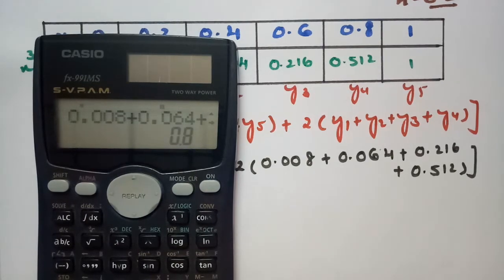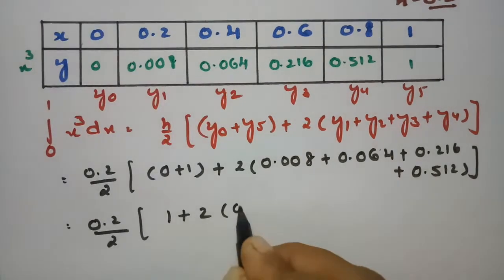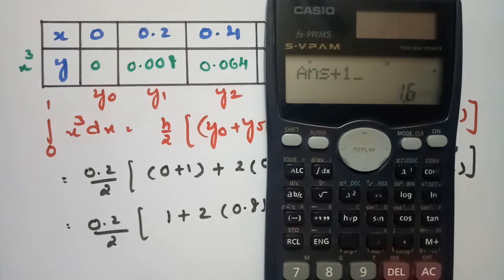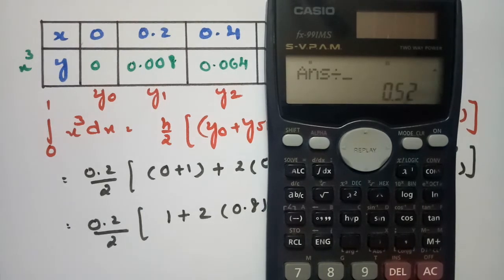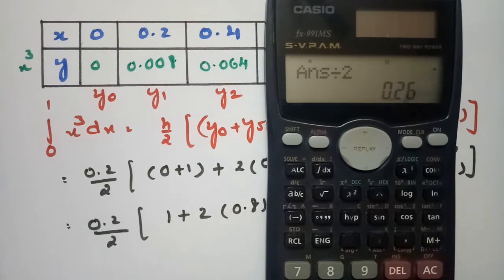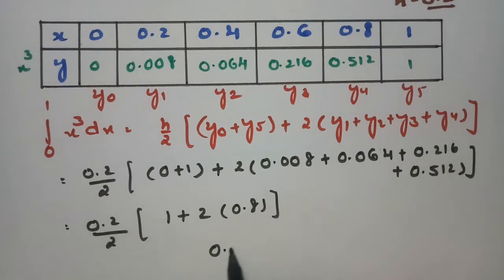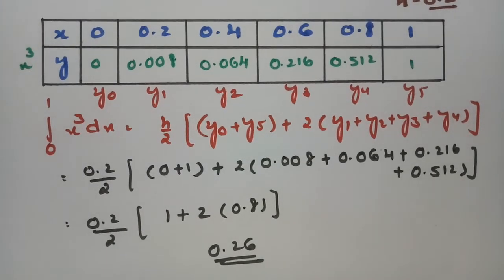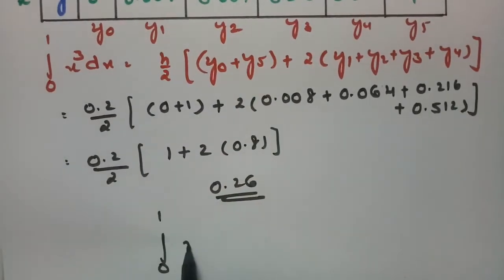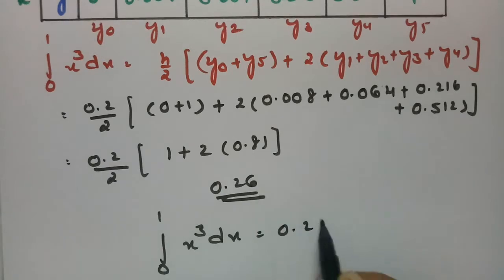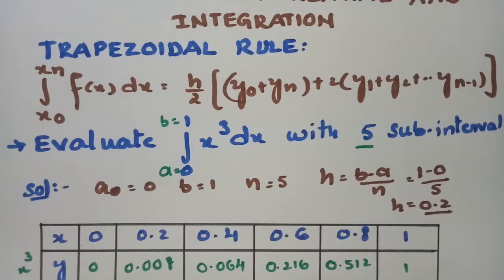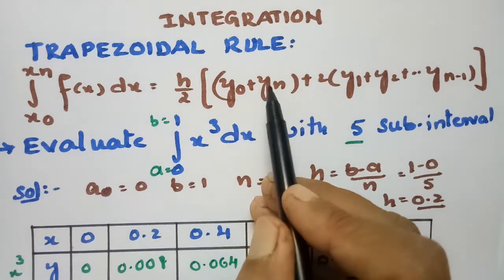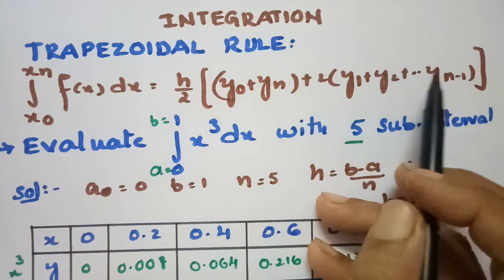The sum of the remaining ordinates is 0.8. So we have 0.2 divided by 2, times (1 + 2 × 0.8), which gives the value 0.26. According to the trapezoidal rule, the integral from 0 to 1 of x³ dx is equal to 0.26.